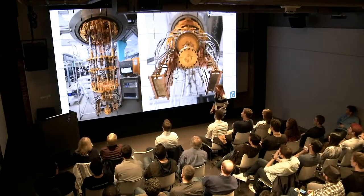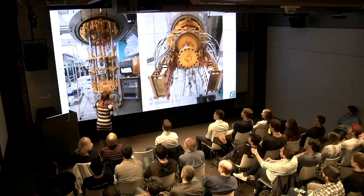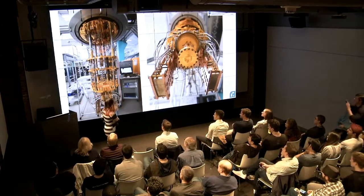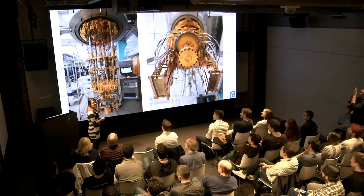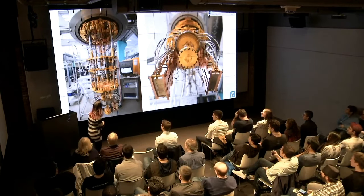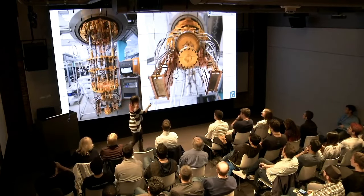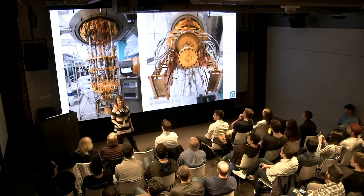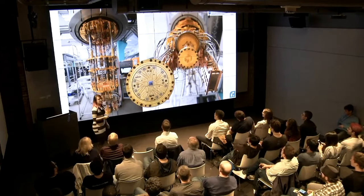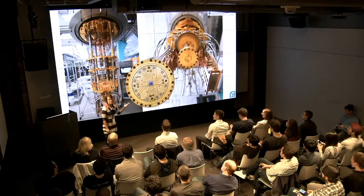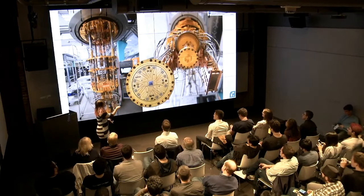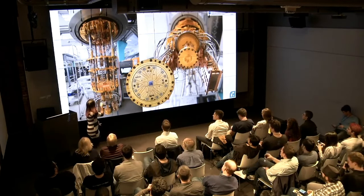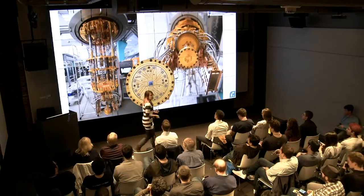A dilution refrigerator — or 'fridge' as we call it — this is what it looks like on the inside. There are different stages, and as you go down, it gets colder and colder. The bottom stage is what we call the mixing chamber plate; it gets as cold as 10 millikelvin. Here's a picture from the bottom of the fridge showing the sample holder, which contains the quantum processor, connected to all the cables and filters and amplifiers that let us read those tiny quantum signals.